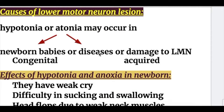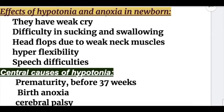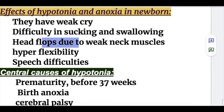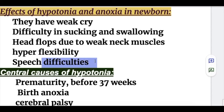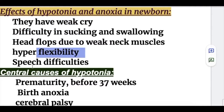Hypotonia or atonia may occur in newborn babies or from diseases damaging the lower motor neurons — either congenital or acquired. Effects of anoxia in newborns include weak cry, difficulty in sucking and swallowing, head flop due to weak neck muscles, hyperflexibility, and speech difficulty.